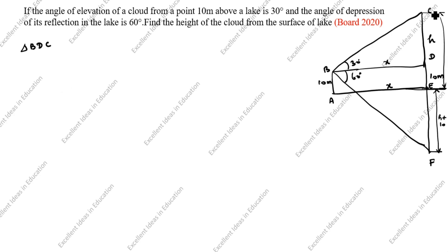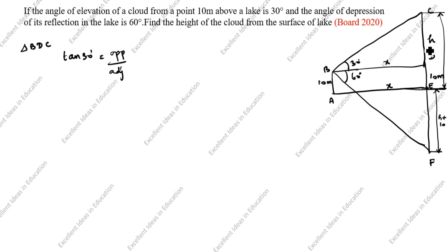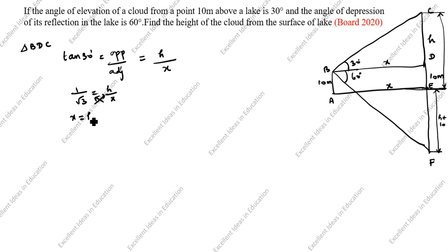Triangle BDC. We need to find this height. So the angle opposite is H — by which formula? We will use the tan formula. Tan 30 equals opposite by adjacent. This is opposite, this is adjacent, this is hypotenuse. Opposite is H, adjacent is X. So tan 30 = 1/√3 = H/X. This gives X = H√3. This is the first equation.